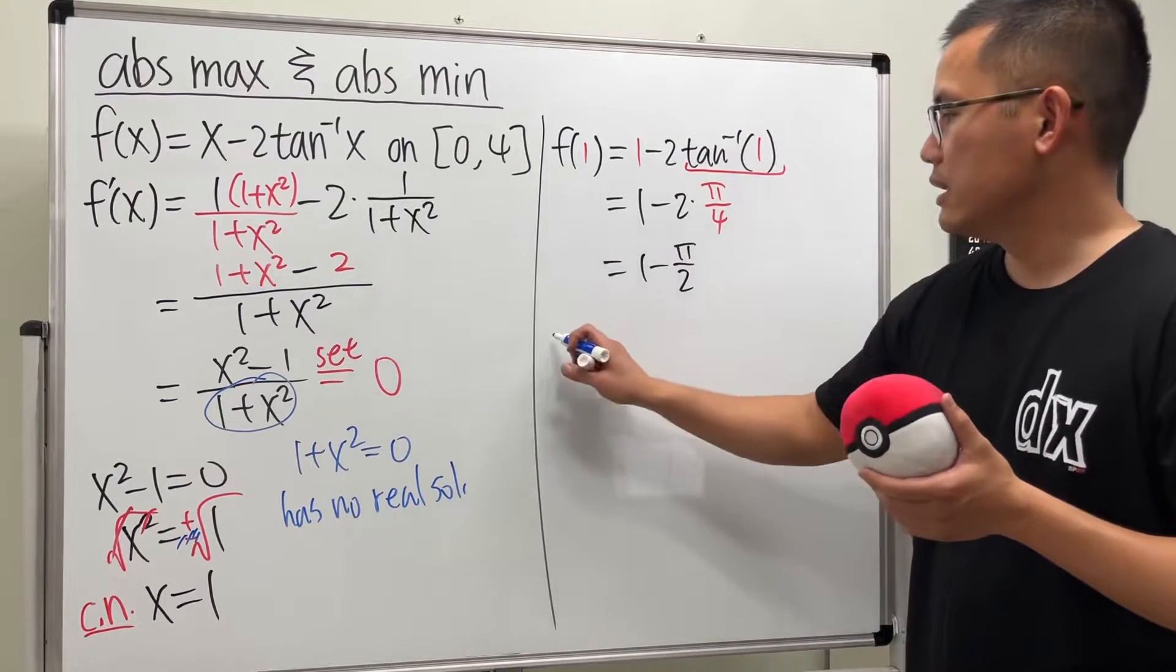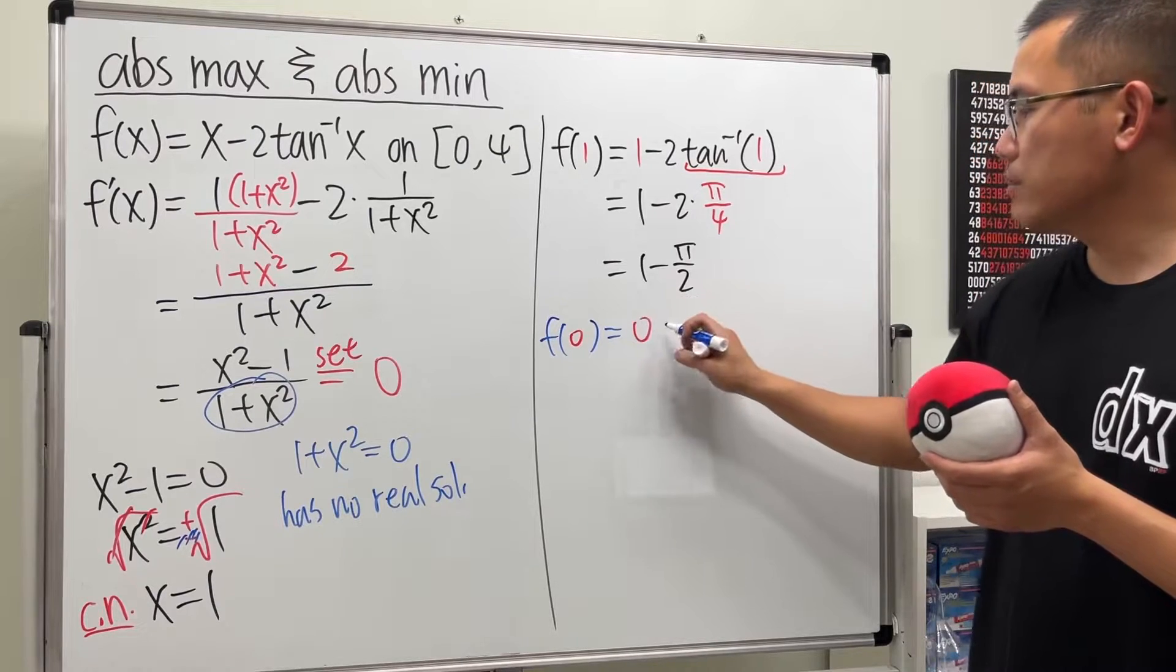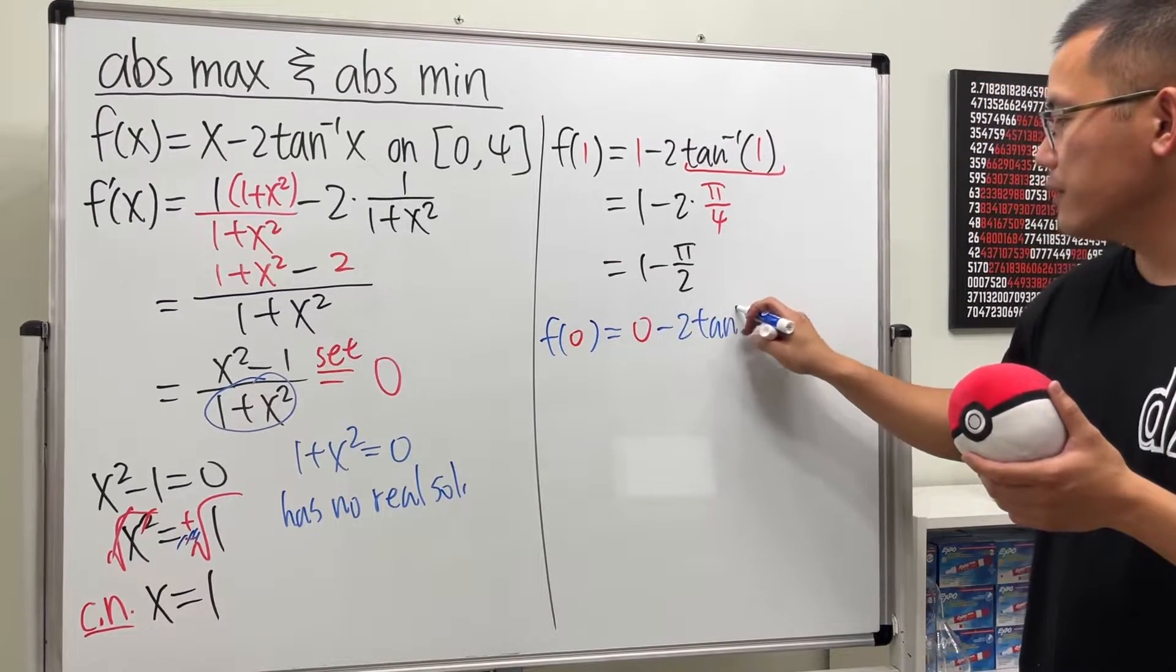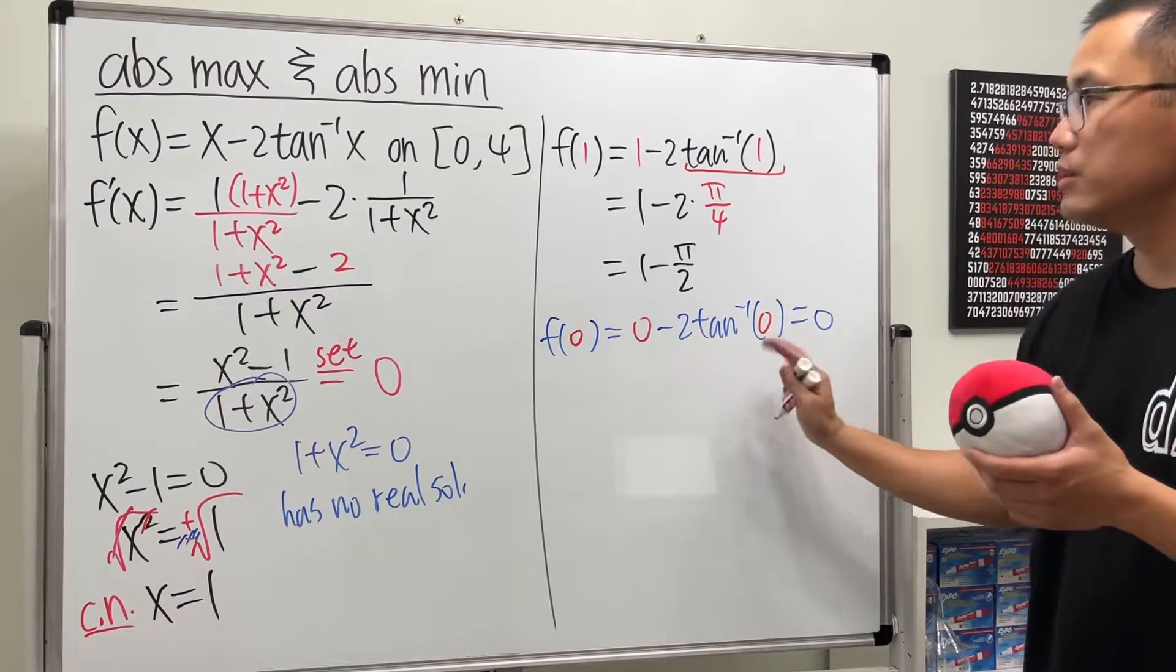All right. Check the endpoint. f(0). This is 0 minus 2 times inverse tangent of 0. And this is just going to be 0. 0 and this is 0.